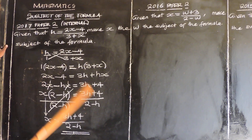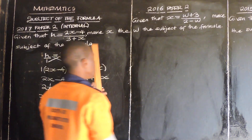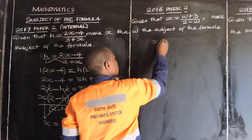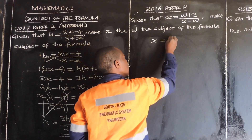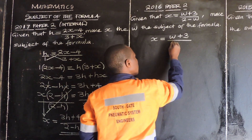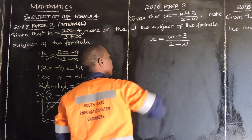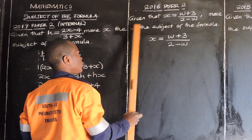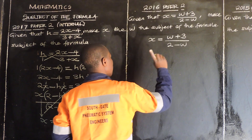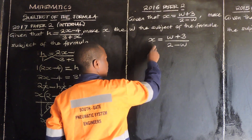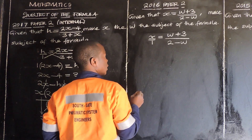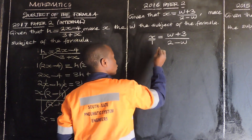Let us move on to 2016 paper 2. So 2016 paper 2 is saying given that x is equal to w plus 3 over 2 minus w. Then we are trying to make w the subject of the formula. Step number 1, remember, we say over 1 to balance the expression. Then step number 2, we cross multiply.